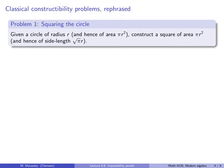So the first problem of squaring the circle says, given a circle of radius r, and hence of area pi r squared, construct a square of the same area. So area pi r squared, and hence the side length is the square root of pi times r. If one could square the circle, then the square root of pi would be in k, which is the field of constructible numbers.